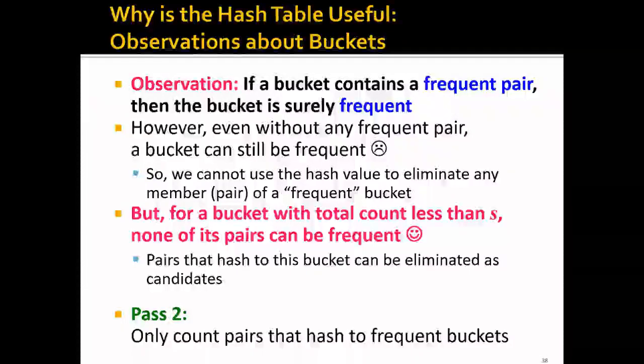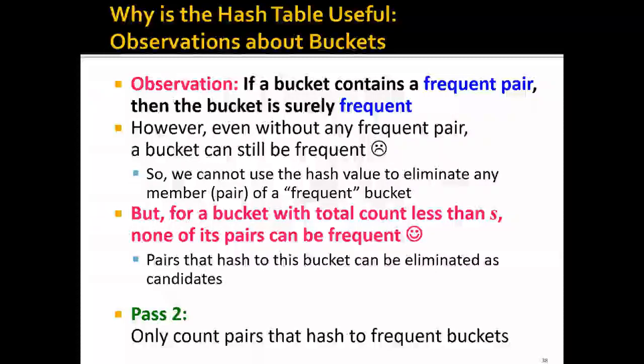One observation for why this hash table is useful: if a bucket contains a frequent pair, then the bucket is surely frequent. However, even without any frequent pair, a lot of pairs can be hashed into one bucket, and the bucket stores the sum of the counts. So there's still a chance that the bucket can be frequent. In this case, we cannot use the hash value to eliminate any member of a frequent bucket. But if this bucket has a total count less than S, then none of the pairs can be frequent, and we can eliminate them in the second pass.